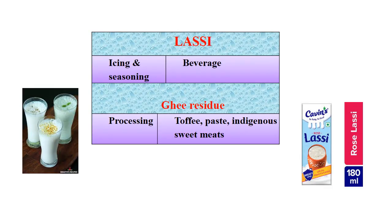Lassi is a byproduct when we make homemade curd and then separate cream by manual churning. The remaining fluid is considered as lassi, and when we add ice and seasoning it becomes a very good beverage. Similarly, ghee residue is another byproduct in the ghee-making process, from which by processing we can make toffee paste or indigenous sweet meats.